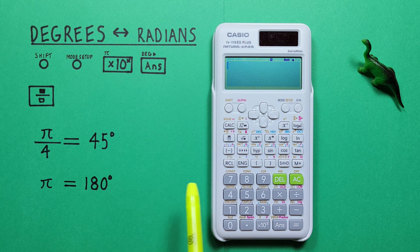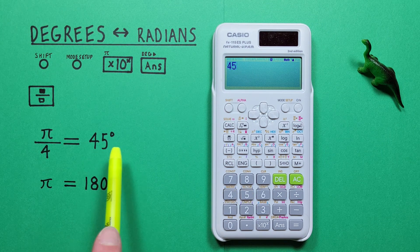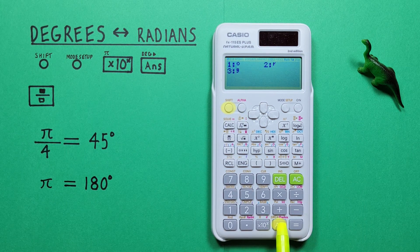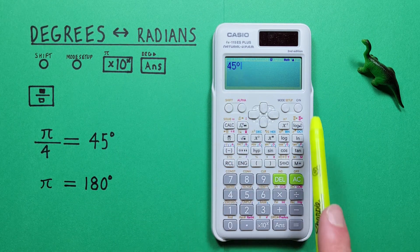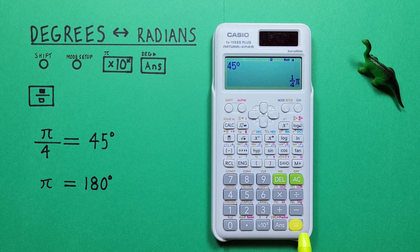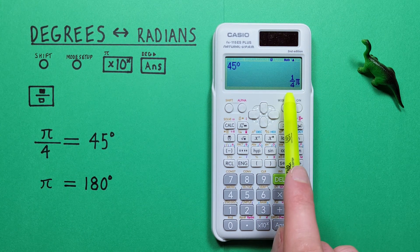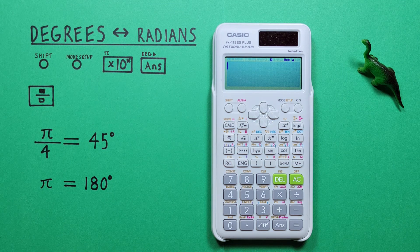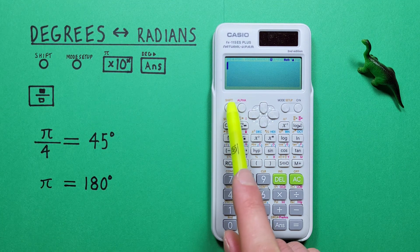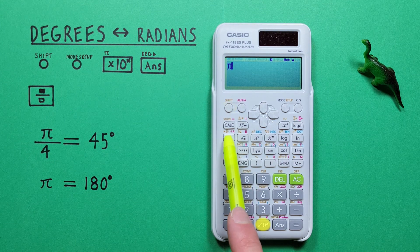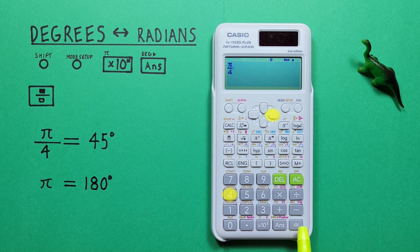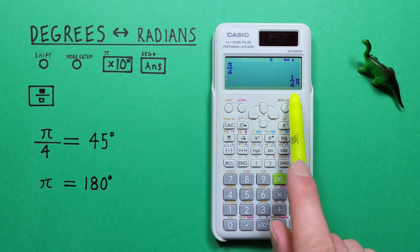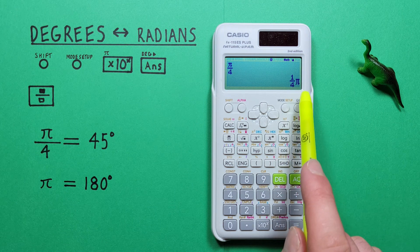Now we can enter our 45 degrees. We type 45, then tell our calculator these are degrees by pressing shift, answer DRG, and choose number one for degrees. We press equals and see we get a result of one over four pi, which we know is the same as pi over four. If we wanted to prove that, we can enter pi over four on our screen and press equals, and the calculator converts that to one over four pi — it's just the way this calculator likes to display these numbers.